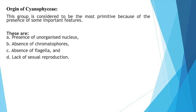Cyanophyceae is considered the most primitive group because of: presence of unorganized nucleus, absence of chromatophores, absence of flagella, and lack of sexual reproduction. They are found in all habitats where life is possible and are distributed throughout the world. Fossil records indicate they originated in the early pre-Cambrian period, though their ancestry is not known. The prokaryotic nature and absence of flagella suggest they possibly originated from unicellular aflagellated cells, likely from terrestrial members.